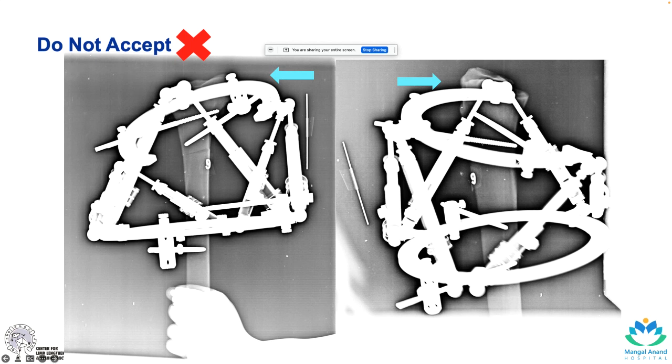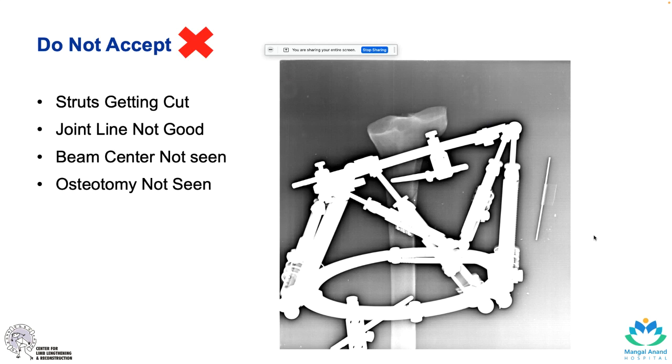Same thing on the lateral - not a true lateral. The ring is obscuring the joint. Some of the strut is getting cut there. This is okay in terms of an AP X-ray, but again the joint line is not perfectly seen. This is like a single focused on this ring.